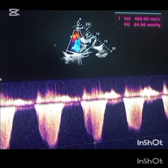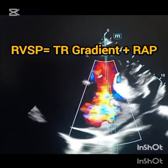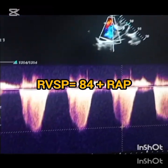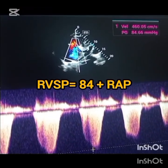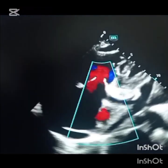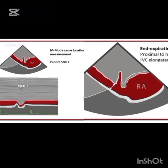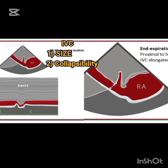Now we have the tricuspid regurgitation velocity and gradient. We add the right atrial pressure — the second component — to this TR gradient to obtain the right ventricular systolic pressure. To calculate right atrial pressure, we need to look at the inferior vena cava. We assess two things in the IVC: first, the diameter — is it enlarged or normal in size; and second, is it collapsible or does it show poor or absent collapsibility.